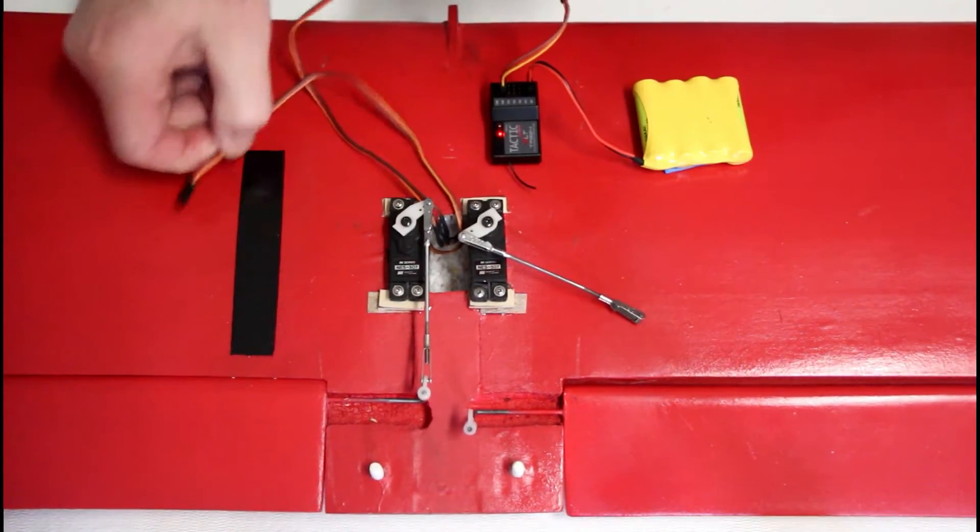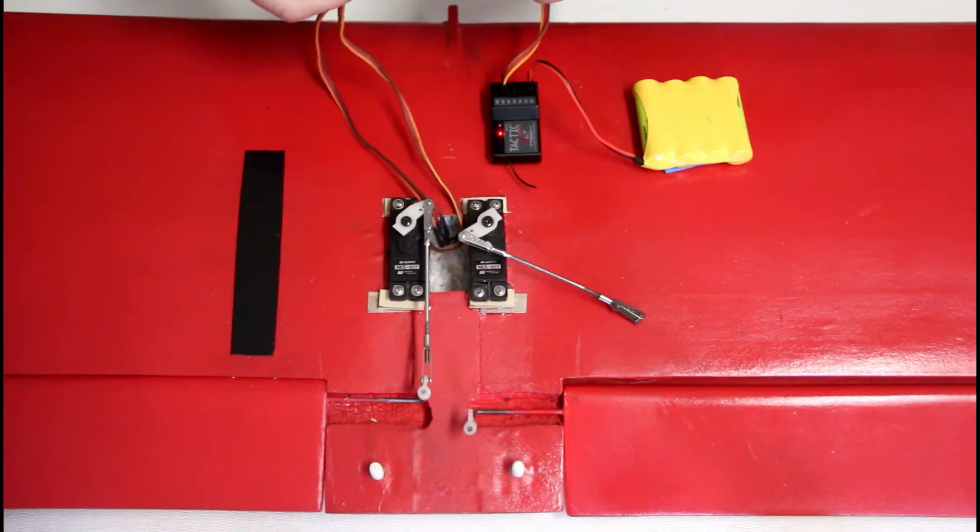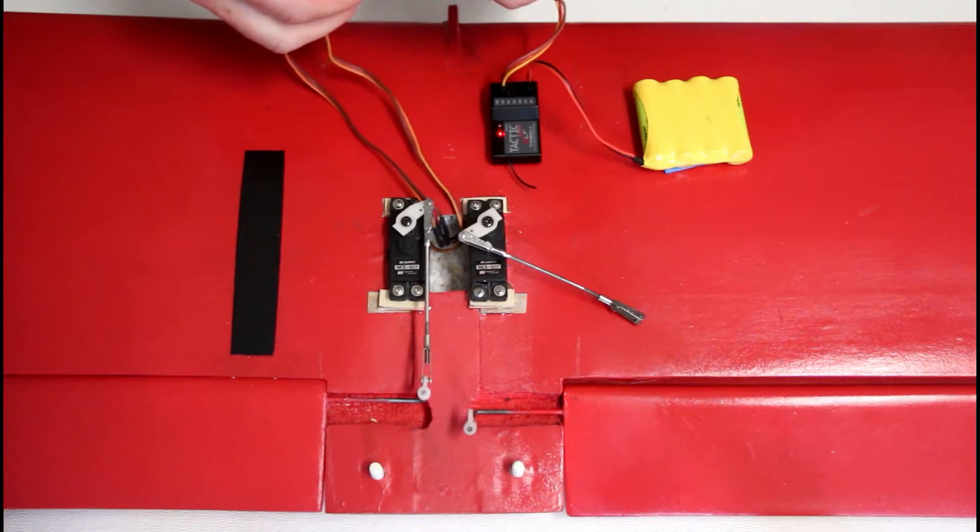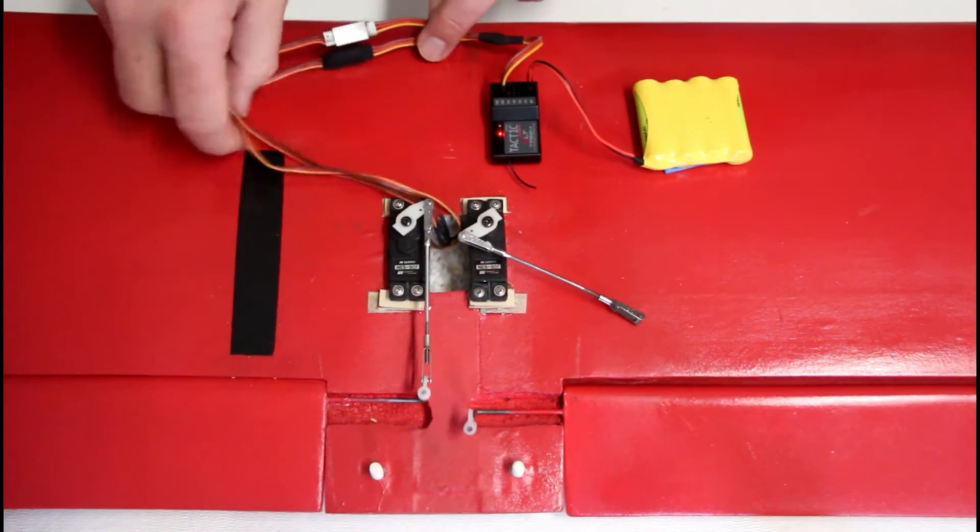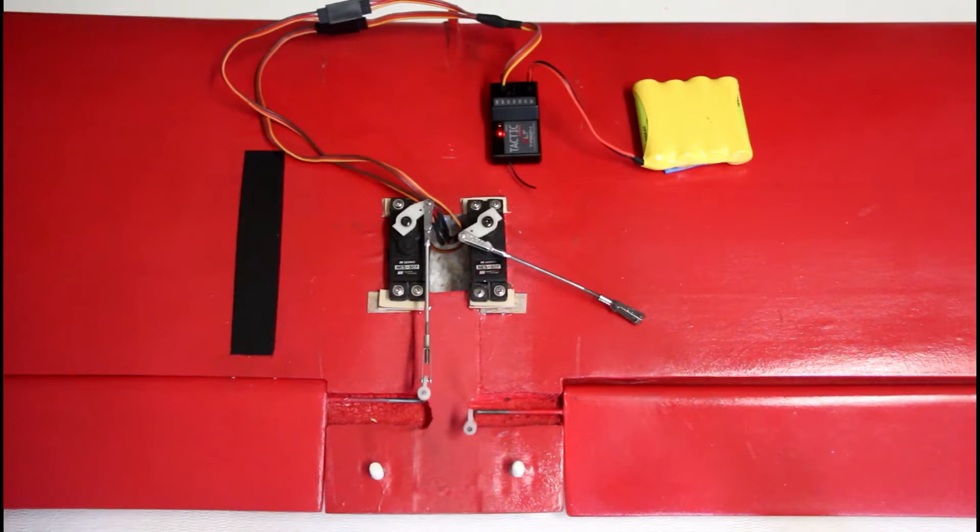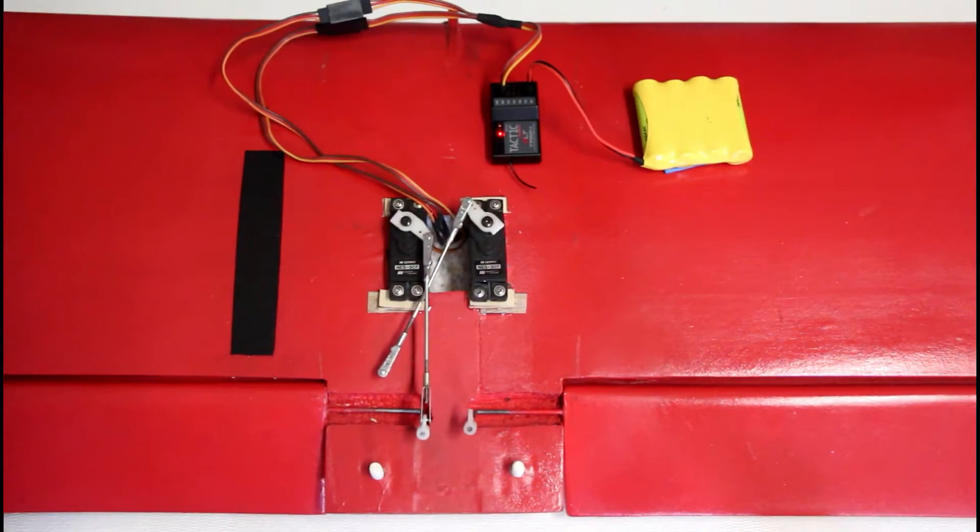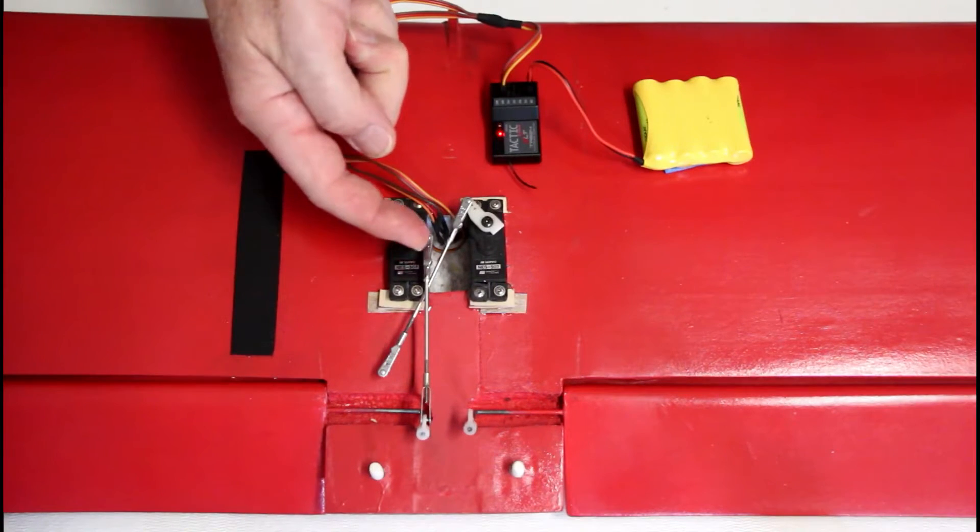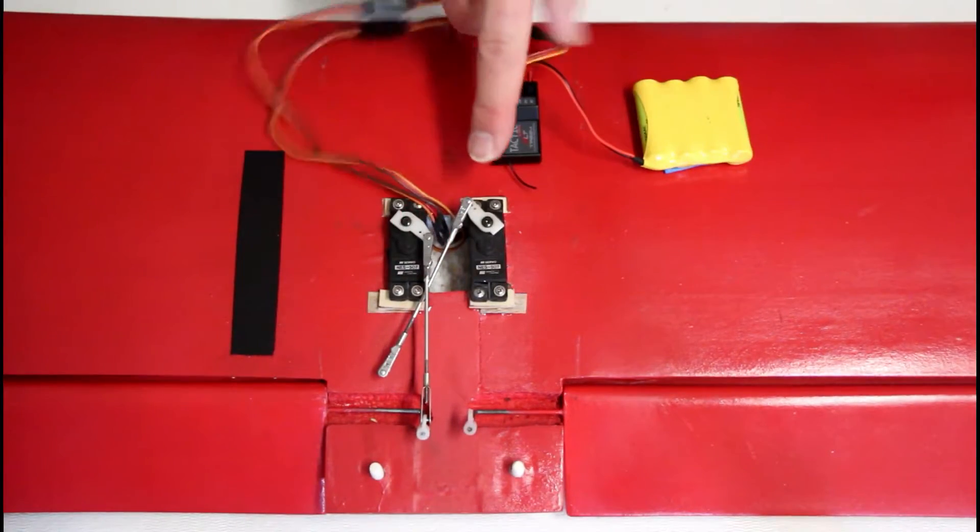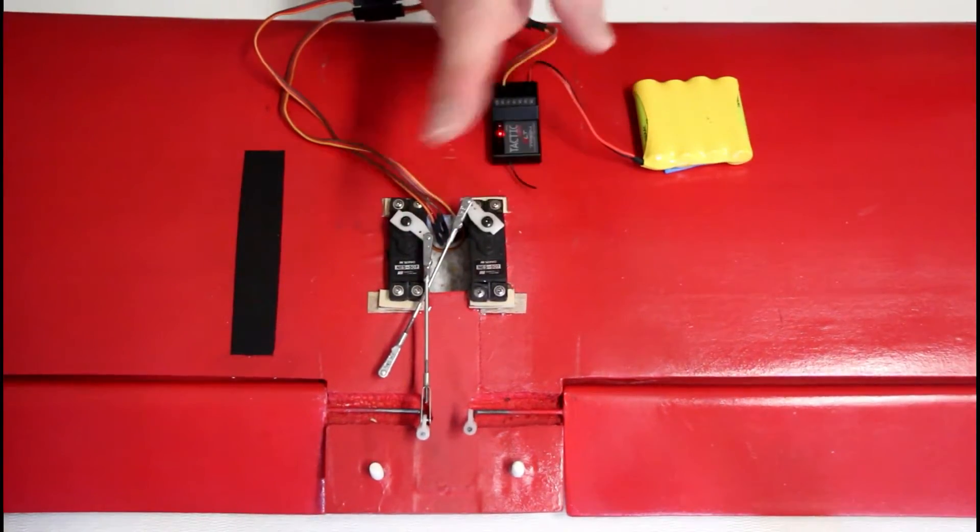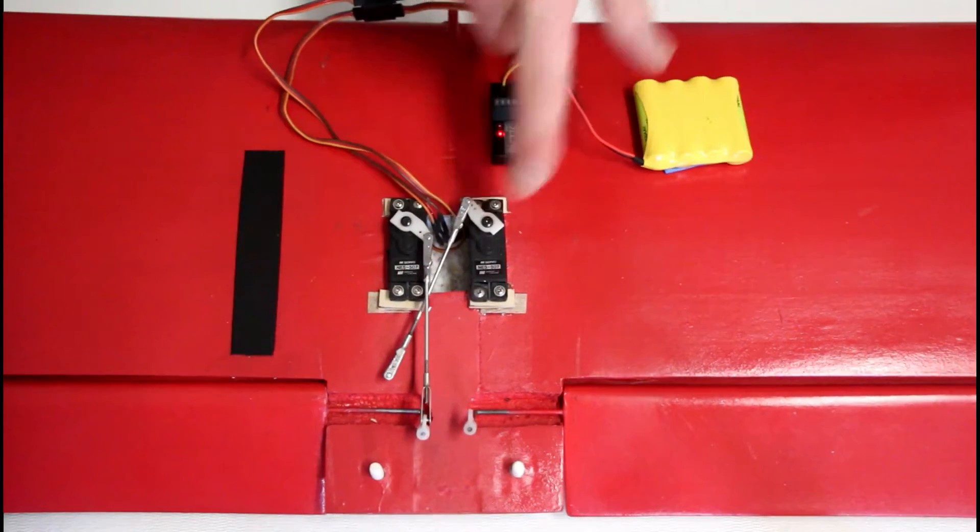Now the Y-harness takes the same signal from that channel and both servos are going to be doing the same thing. So you notice that if I want the flaps in the down position, I need the servo here, but this servo is over here, so we need to reverse this servo.